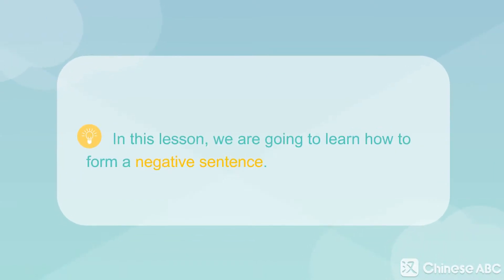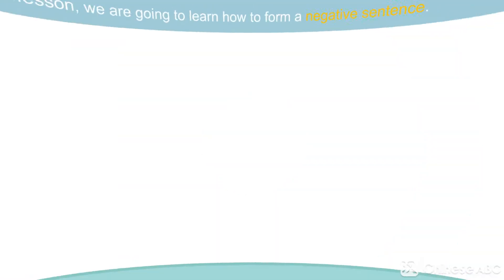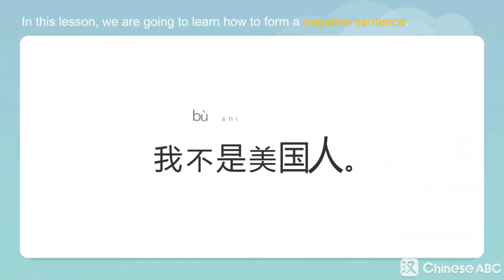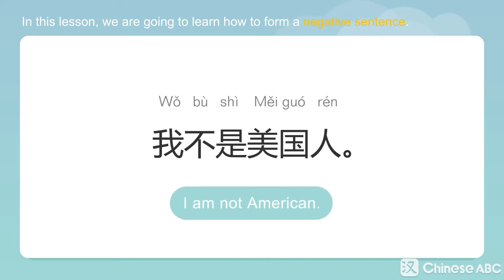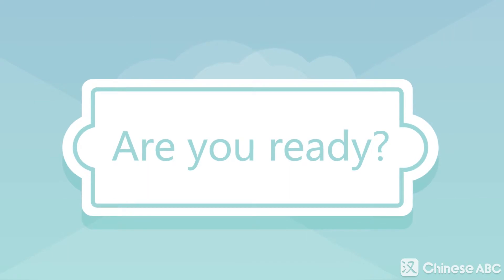In this lesson, we are going to learn how to form a negative sentence. 我不是美国人 — I am not American. Are you ready?